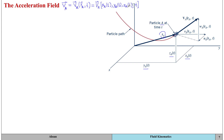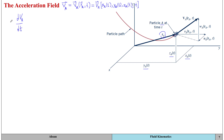Because velocity can be a function of both position and time, the value of velocity can change due to changes in time as well as changes in the particle's position. Since acceleration is the time rate of change of velocity, we need to take the derivative of the velocity of particle A with respect to time, giving us the acceleration of particle A at time t.